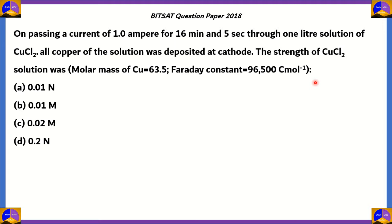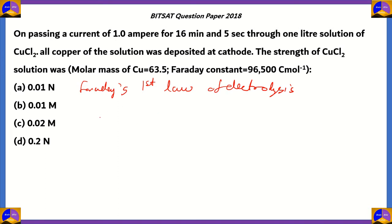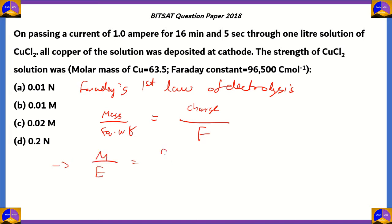How do we solve this question? We're going to apply Faraday's first law of electrolysis. It states that the number of equivalents — which can be expressed as mass divided by equivalent weight — is equal to the charge in the given time period divided by the Faraday constant. So mass divided by equivalent weight equals charge Q divided by 96,500 coulombs per mole.